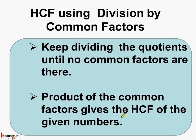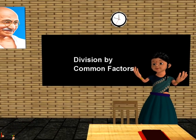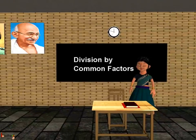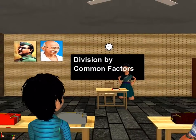So that was all about finding HCF using the division by common factors method. That's all for now. Bye-bye children.